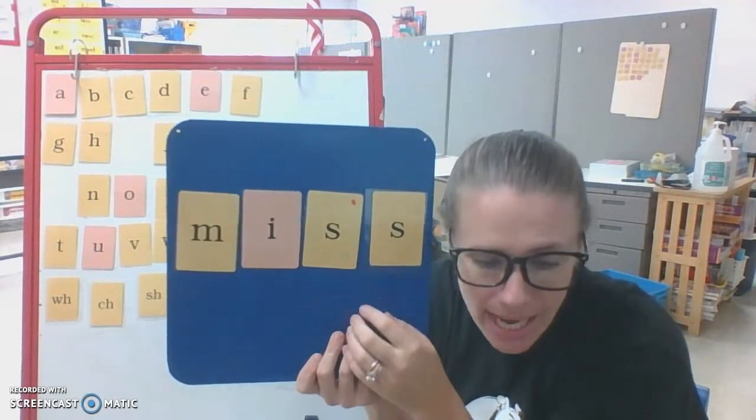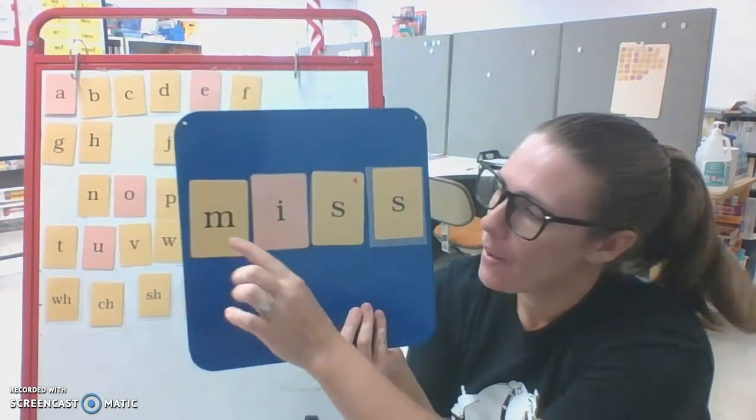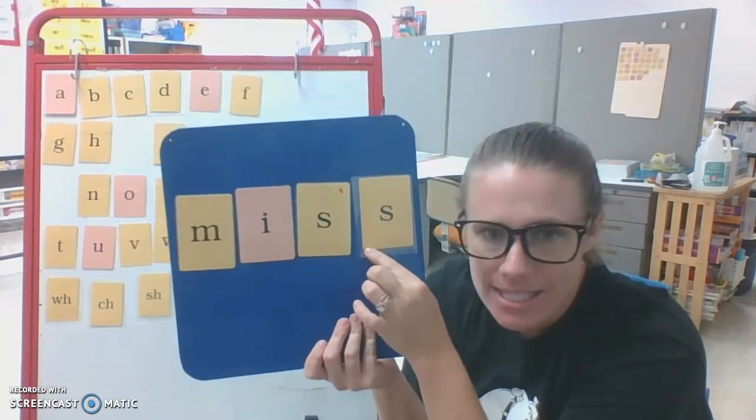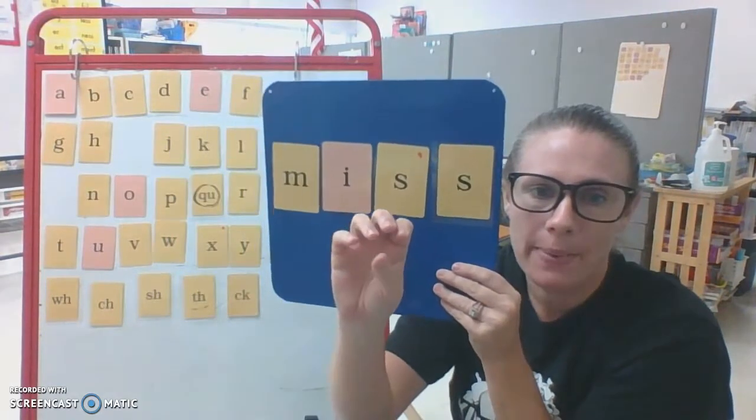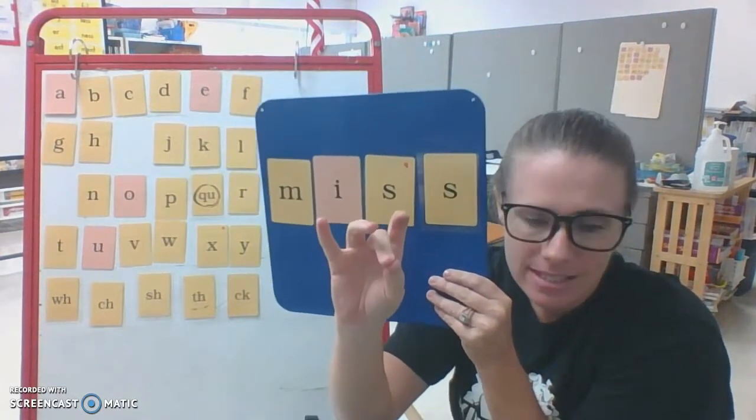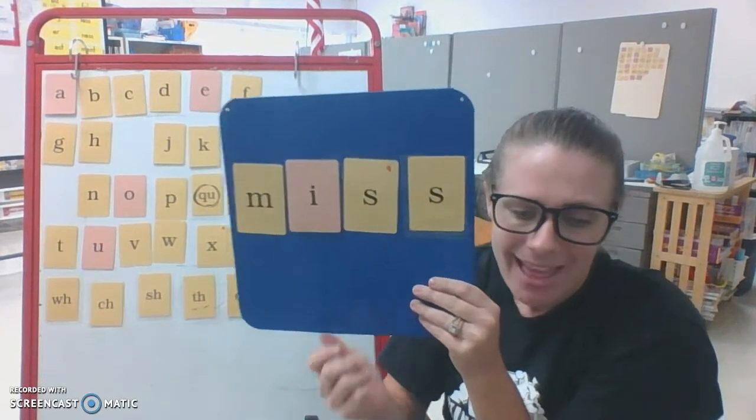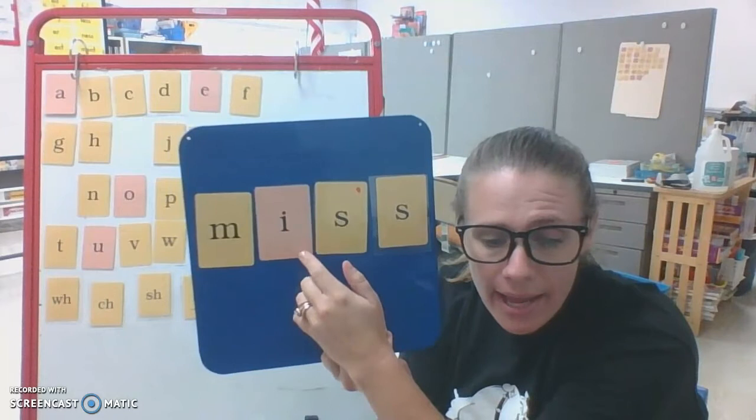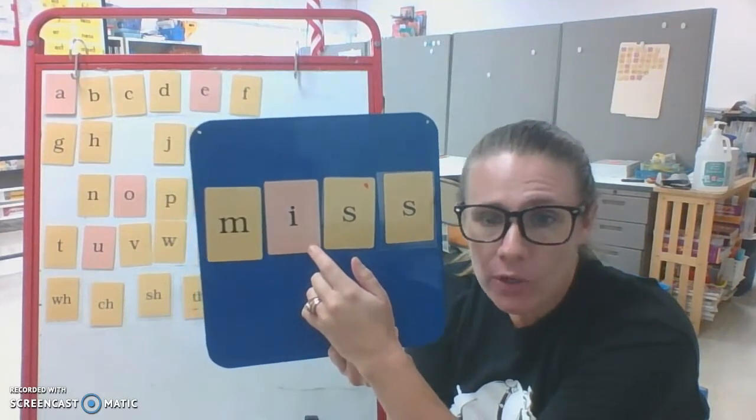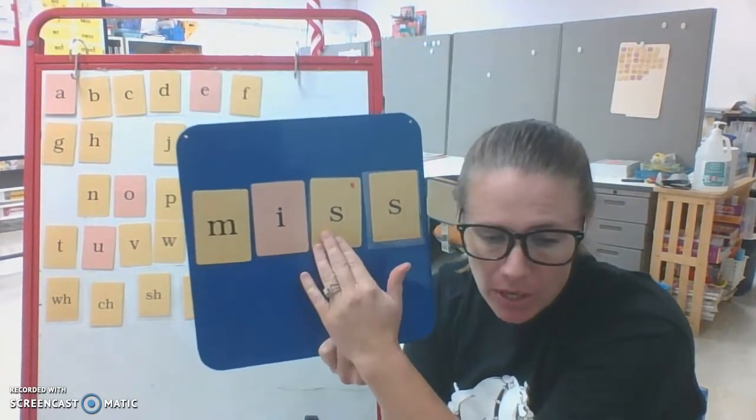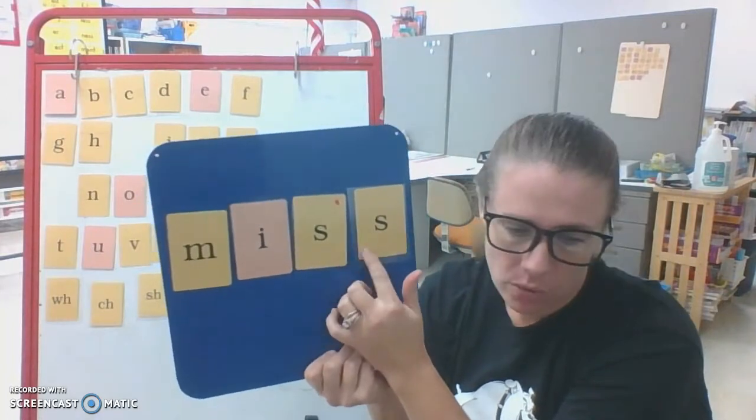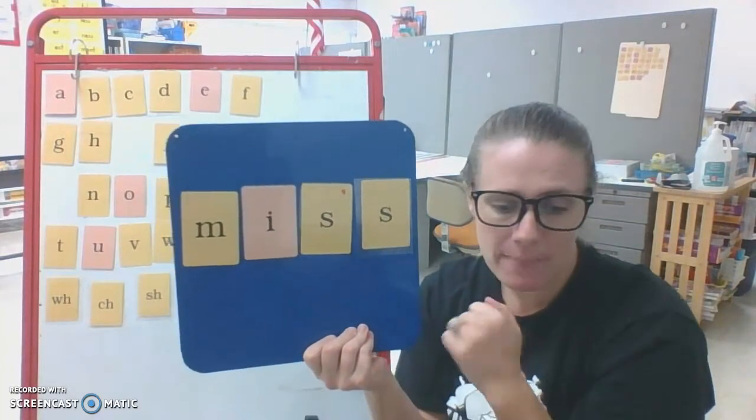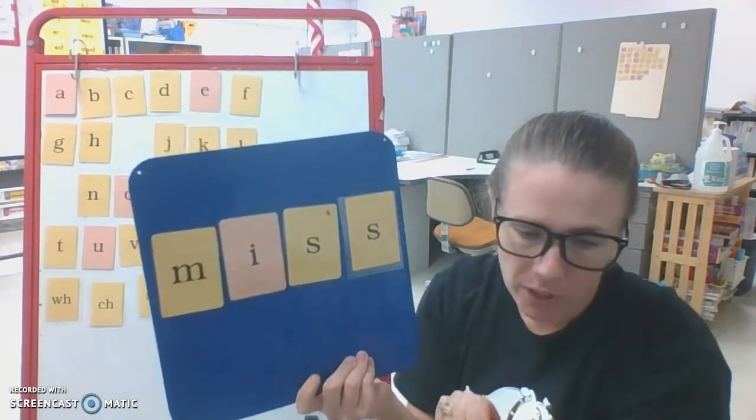See that? Even though there's two S's, it's only one sound. It goes, M, I, S. That would be just one tap. M, I, S. This happens when an S comes right after a short vowel to end the word. And we have to double it when that happens. Let me show you with a few other words.